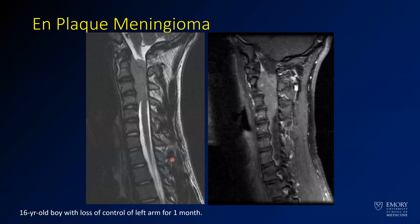This is just an example of an en plaque meningioma — a long-segment lesion where you can see the dura coming through and it's kind of expanding the spinal canal.